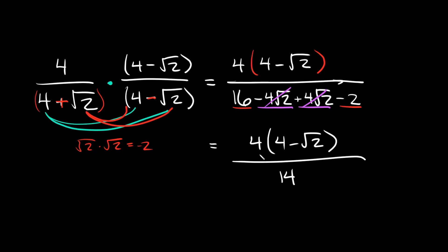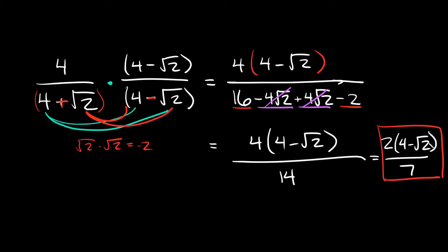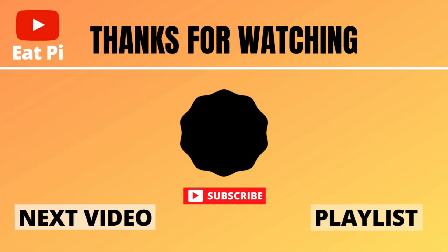This is why you want to keep the top raw and not distribute yet — because we have a 4 on top and 14 on the bottom, and we can simplify 4 over 14 to 2 over 7. So the final answer is 2 over 7 times the quantity 4 minus the square root of 2. There's still a radical in the numerator, but that's totally fine — we can always have radicals in the numerator, we just can't have them in the denominator. If you found the video helpful, leave a thumbs up, and let me know in the comments if you have any questions.